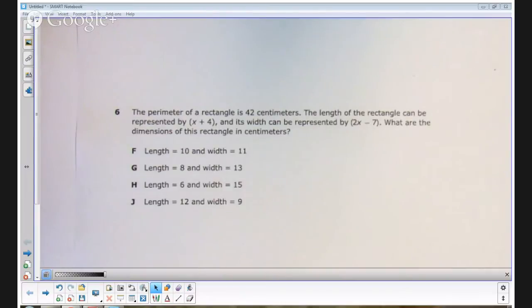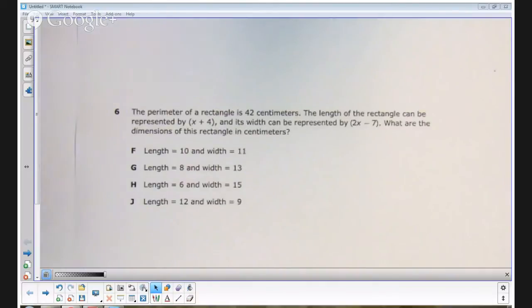The perimeter of a rectangle is 42 centimeters. The length of the rectangle can be represented by x plus 4 and its width can be represented by 2x minus 7. What are the dimensions of this rectangle in centimeters?